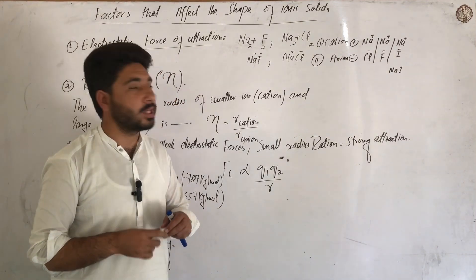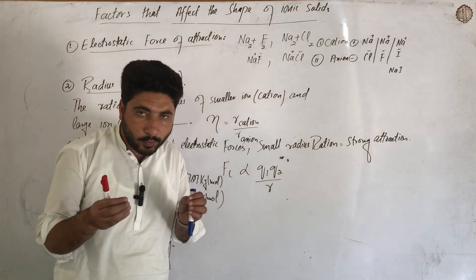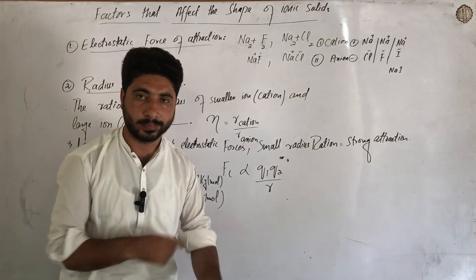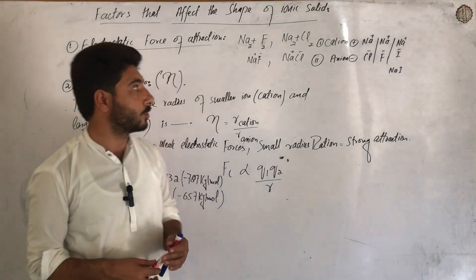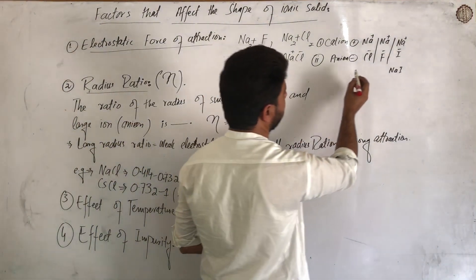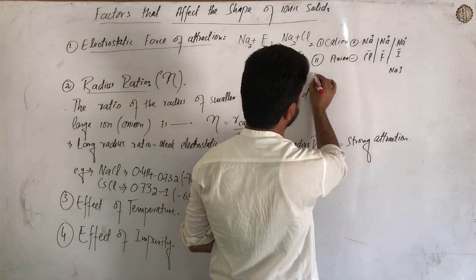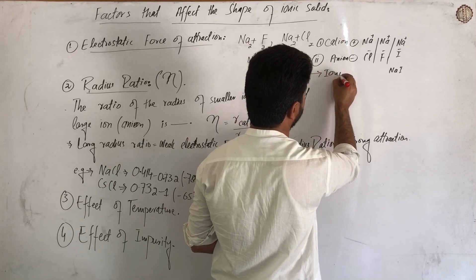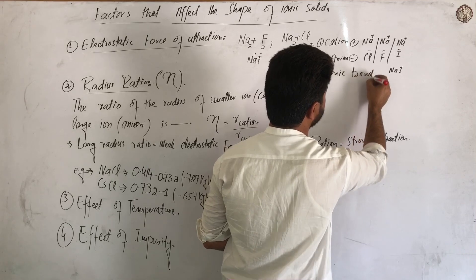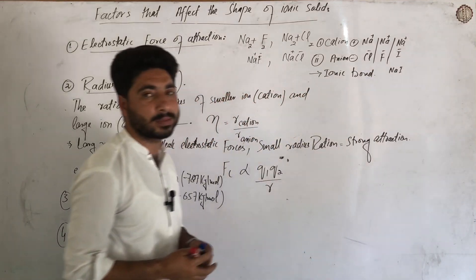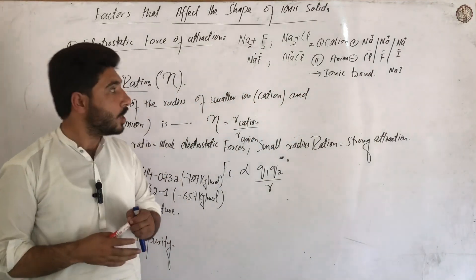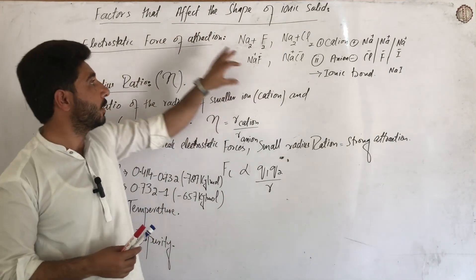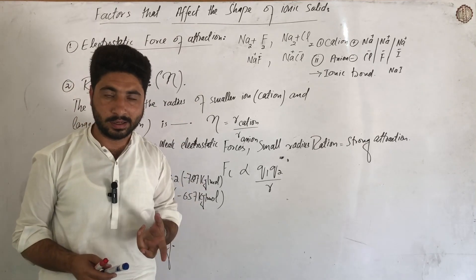So the first factor is the electrostatic force of attraction. The electrostatic force is most important in the ionic bond. The most of the electrostatic force is what determines the shape of the ionic solid. So electrostatic force is the key factor affecting the shape of ionic solid.